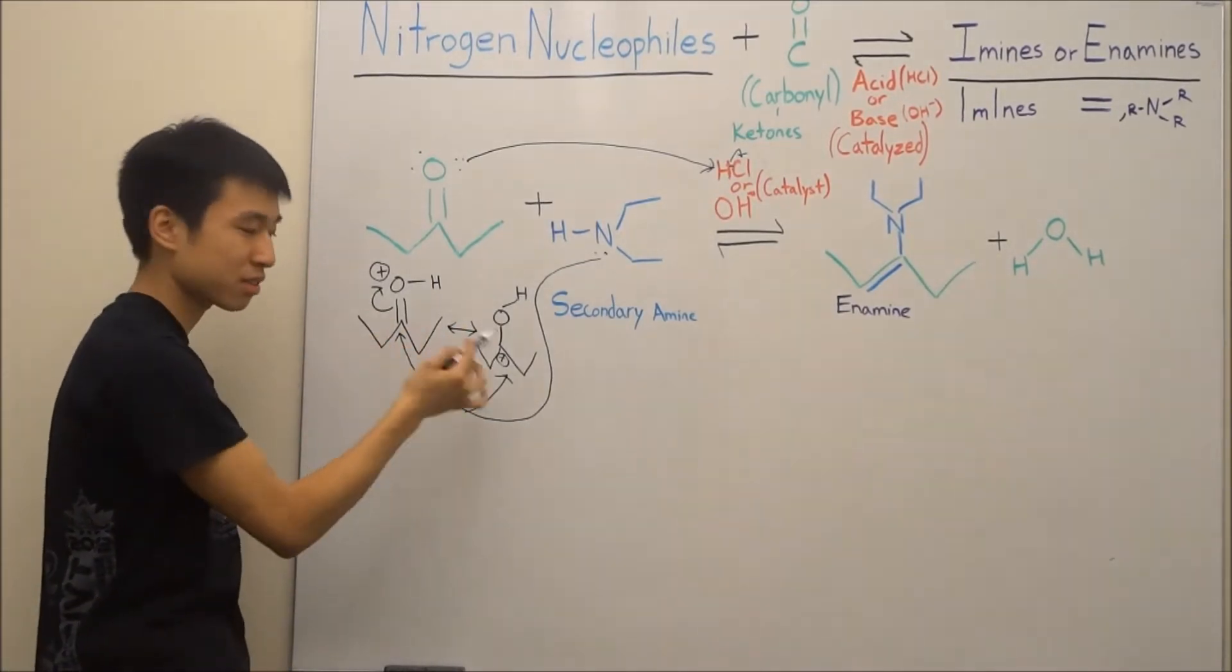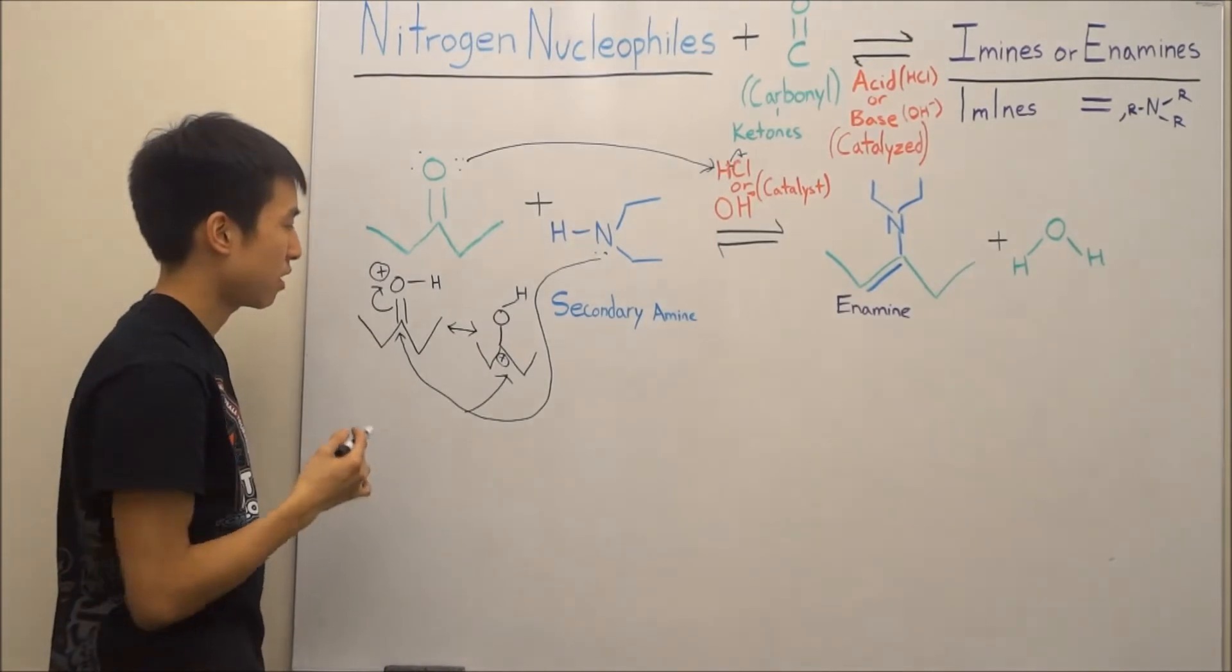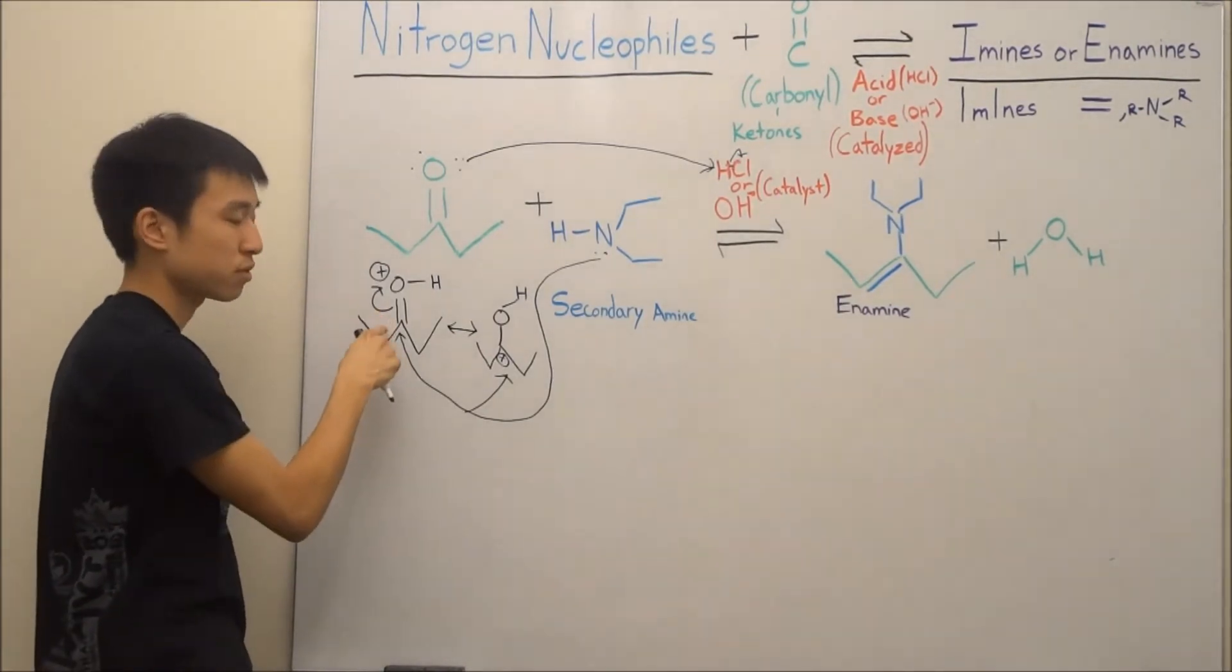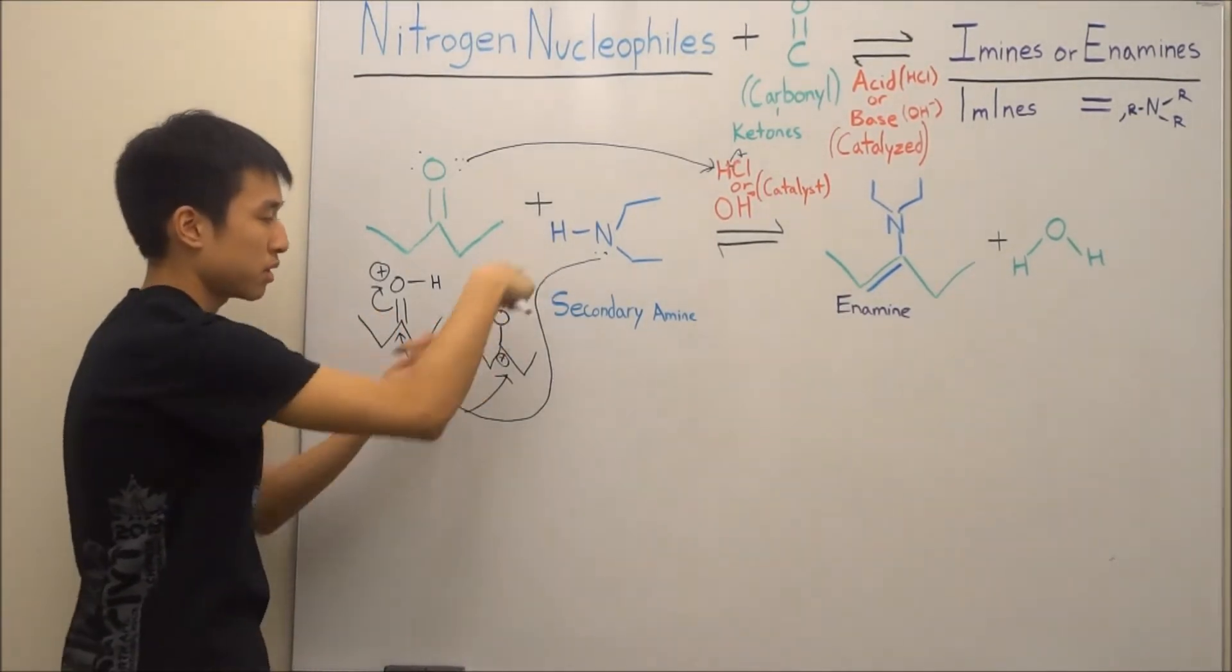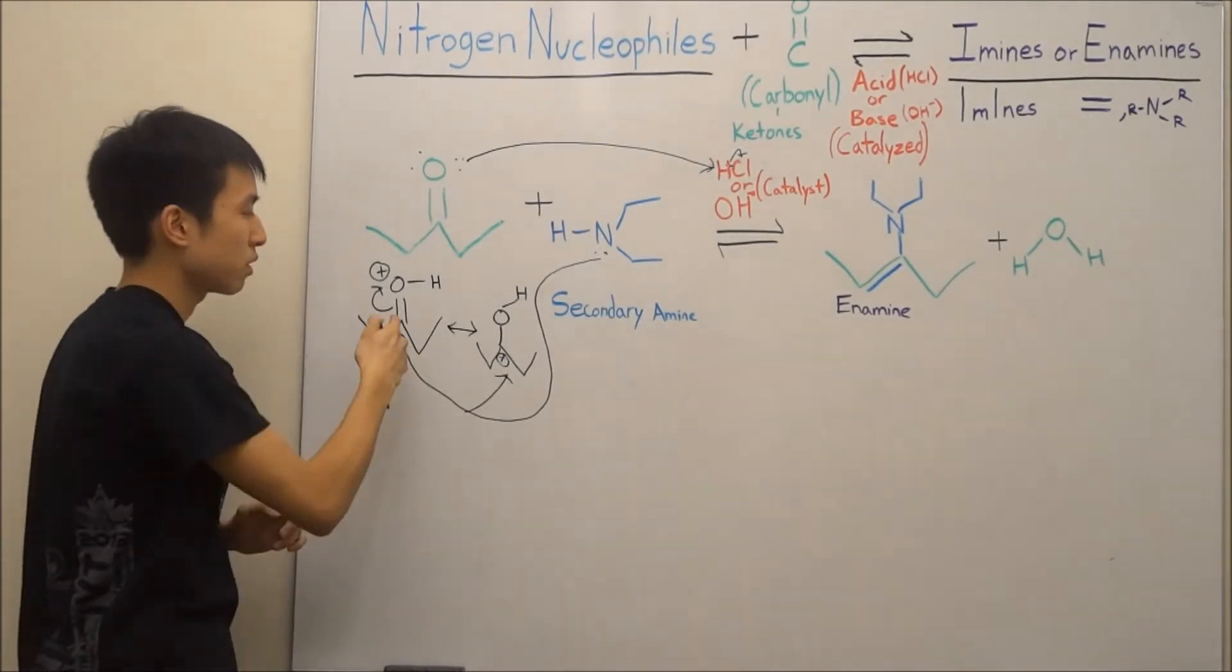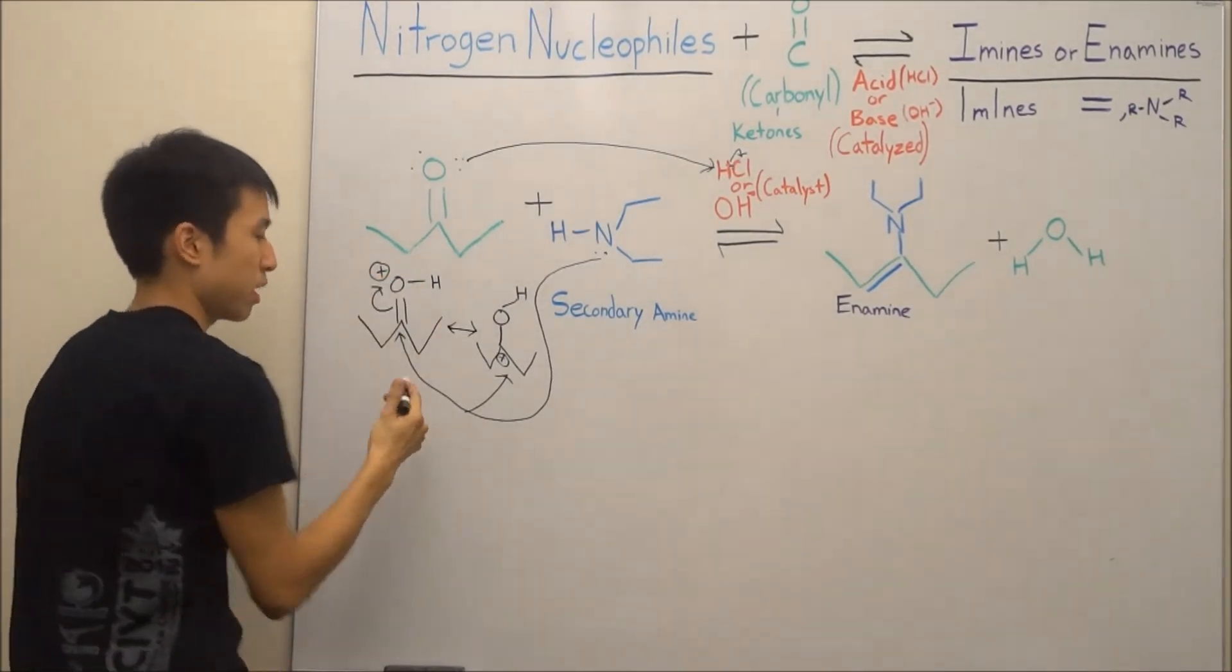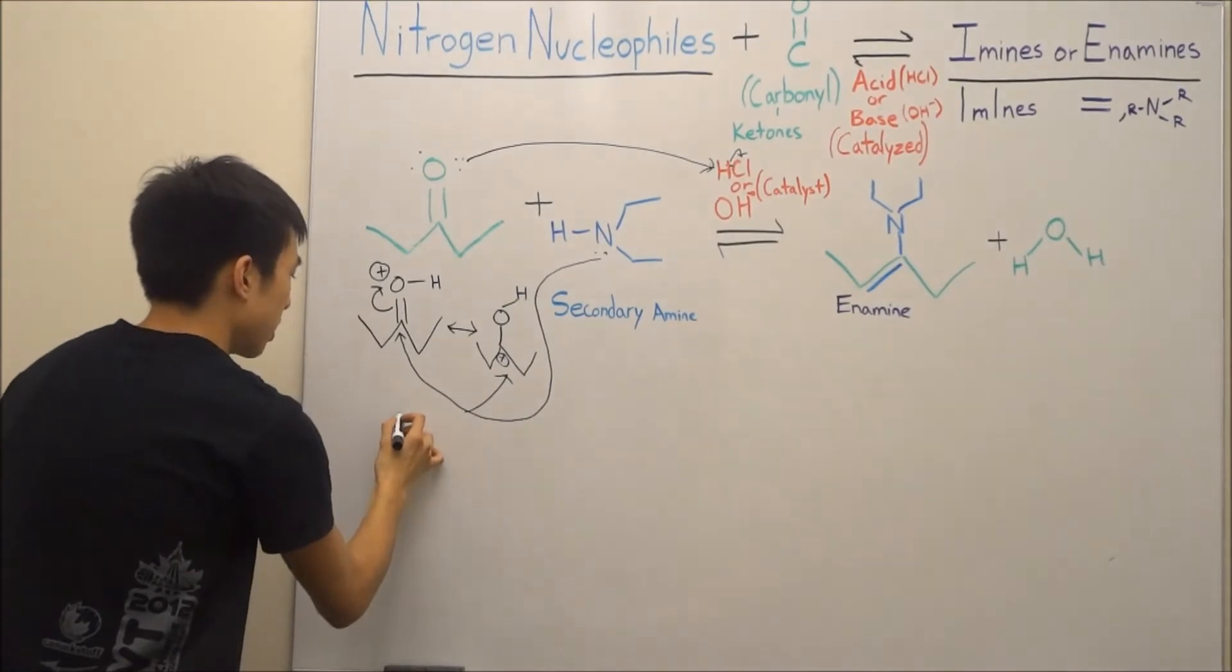But yeah, you target this carbon here, and then once you target this carbon here, carbon has four bonds already. But now when you attack, he's getting a fifth bond, so he throws away the double bond and resonates it up. And then you're going to get this product over here.